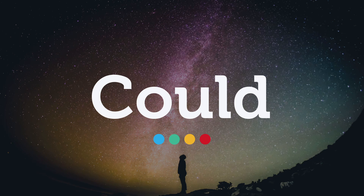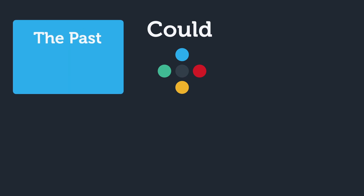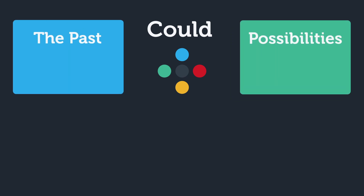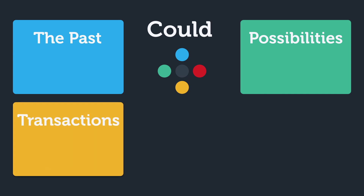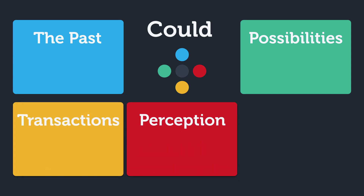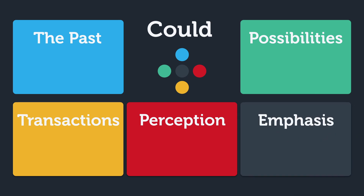The word 'could' is a tricky modal verb in English with a lot of uses. To make it easier to understand, let's divide it into five categories. We can use 'could' to talk about the past, to talk about future possibilities, for transactions, to talk about the way in which we perceive the world, and it's an excellent way to add emphasis to specific feelings.